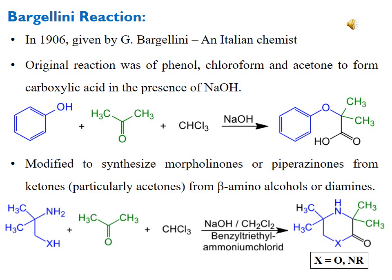The Bargellini reaction was given by the Italian scientist Bargellini in 1906. Another German scientist had introduced some things about this type of reaction, but was unable to clarify the nature of the product. In 1906, Bargellini first clearly found the nature of the product. The reaction includes phenol, chloroform, and acetone to form carboxylic acid in the presence of sodium hydroxide, which acts as an activator, not a catalyst.